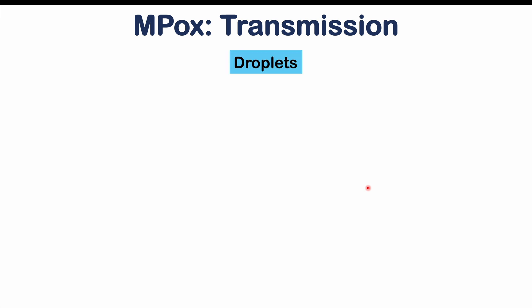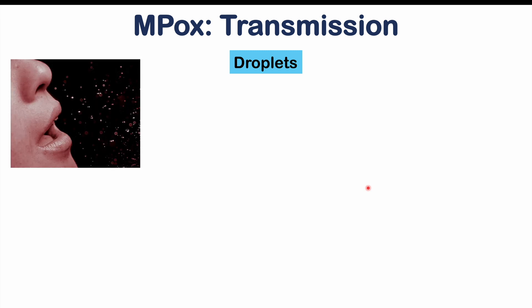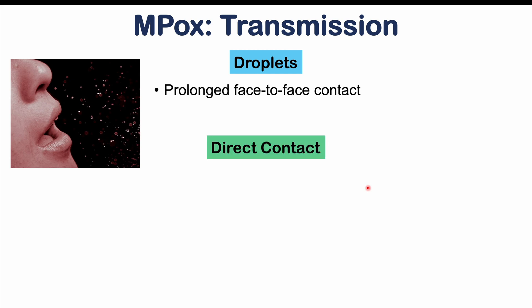Let's discuss how this virus is transmitted. One way is through droplets — from close contact where an individual is talking nearby and respiratory droplets are produced. However, you need prolonged face-to-face contact; it's not something where you walk by someone and get infected. Another very important route is through direct contact.